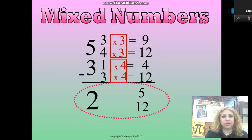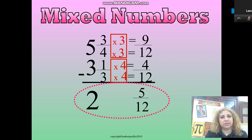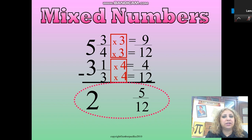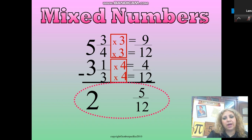The result is 4 over 15, which is already in simplest form. Here is another example for subtraction — pause the video and try to solve it on your own, then check your answers. Don't forget to simplify if needed. In this case we don't need to simplify since 5 and 12 are not divisible by the same factor.